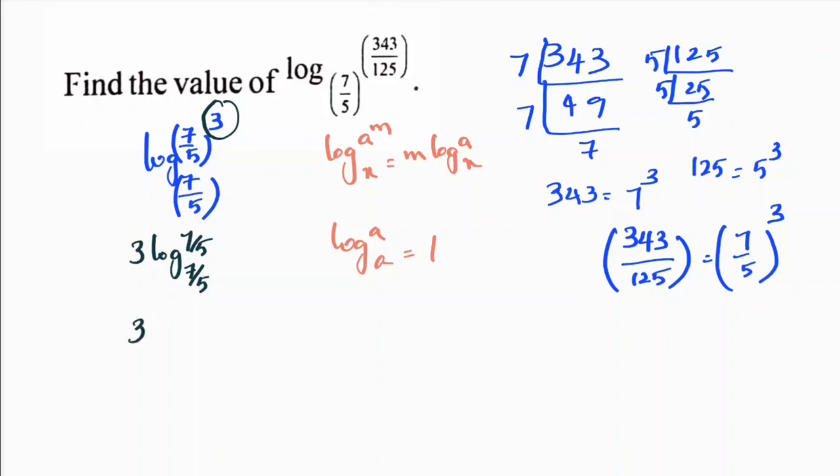3 times log 7 by 5 to the base 7 by 5 equals 1. So 3 times 1 is 3. Therefore, the value of log 343 by 125 to the base 7 by 5 is 3.